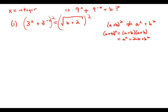So what we wind up when we square this binomial, we wind up with 3x squared plus 2 times 3x times 3 to the negative x plus 3 to the negative x squared. And on the right side, we just undo the radicals. So square root of b plus 2 squared is simply b plus 2.